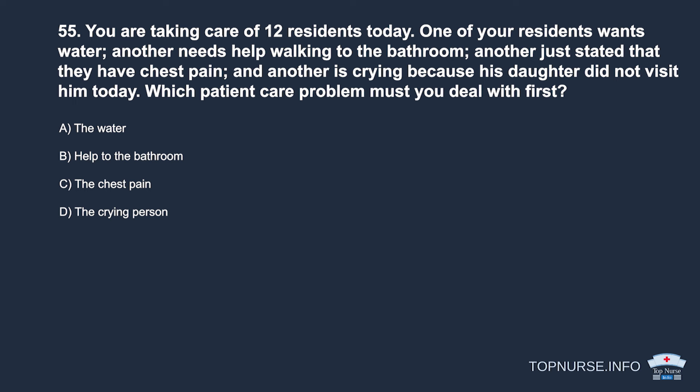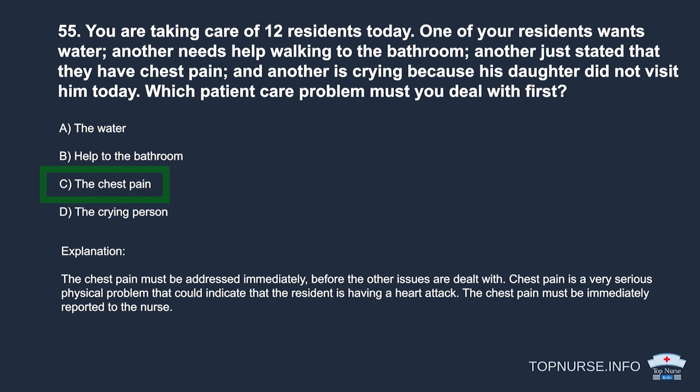Question 55: You are caring for 12 residents. One wants water, another needs help to the bathroom, another has chest pain, and another is crying because his daughter didn't visit. Which must you deal with first? a. The water. b. Help to the bathroom. c. The chest pain. d. The crying person. Correct answer: c. The chest pain. Chest pain is a serious physical problem that could indicate a heart attack and must be immediately reported to the nurse.